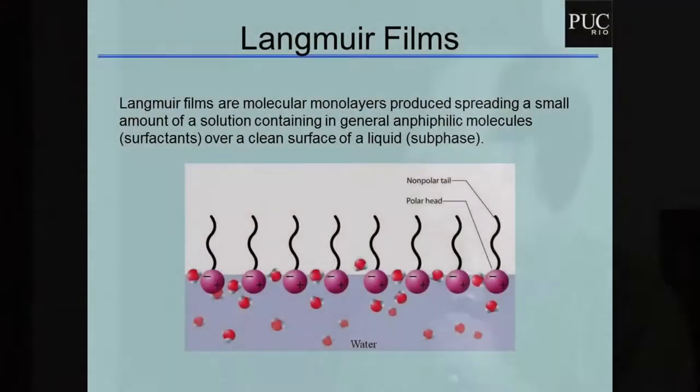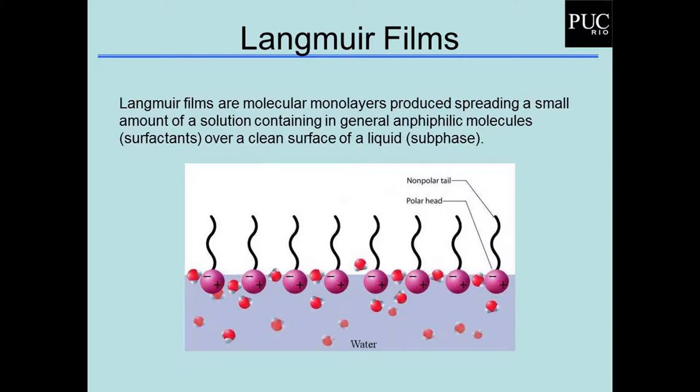O que não é muito conhecido é aquele filme formado na interface ar-água. Esse filme se chama filme de Langmuir, e são monocamadas produzidas pelo espalhamento de uma pequena quantidade de solução contendo moléculas anfifílicas — embora nem sempre sejam anfifílicas — sobre uma superfície limpa do líquido. A parte hidrofóbica fica para o ar e a parte polar fica sentada no líquido.